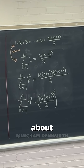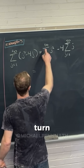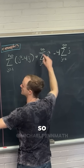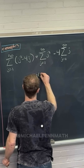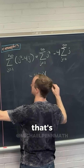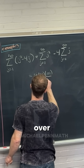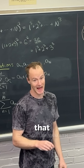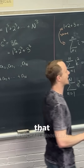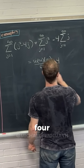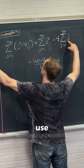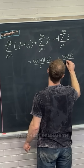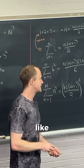The first sum — the sum of squares — uses the formula where the role of capital N is played by 50, giving us 50 times 51 times 101, all over 6. So that's the sum of the first 50 squares. Then we have minus 4 times the sum of the first 50 integers, which is 50 times 51 all over 2.